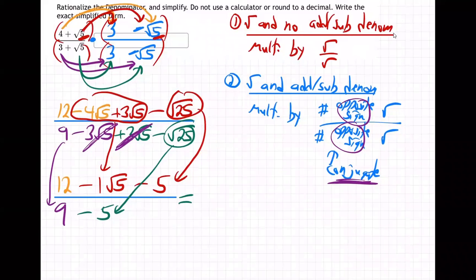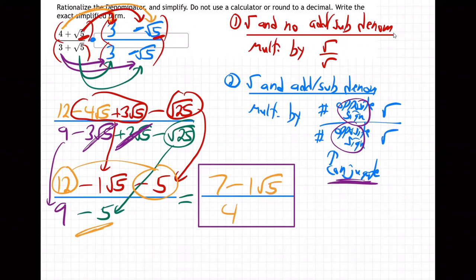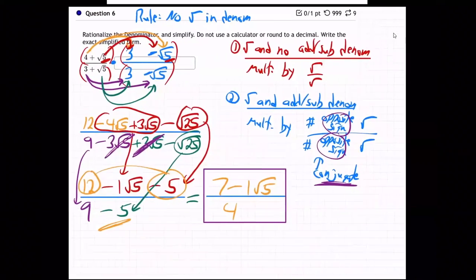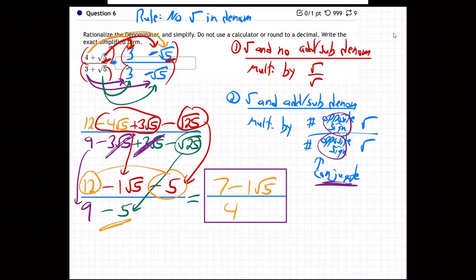So what does that leave us? On top, 12 minus five made seven, minus one root five. On the bottom, nine minus five is four. And that's it — we are done. We got rid of the root from the bottom. When you have a root with no adding or subtraction, just do root over root. But if you have a root and adding or subtraction, use the whole denominator with the opposite sign in the middle, multiply top and bottom — first to both, second to both — outsiders with outsiders, insiders with insiders — and combine all the like terms.